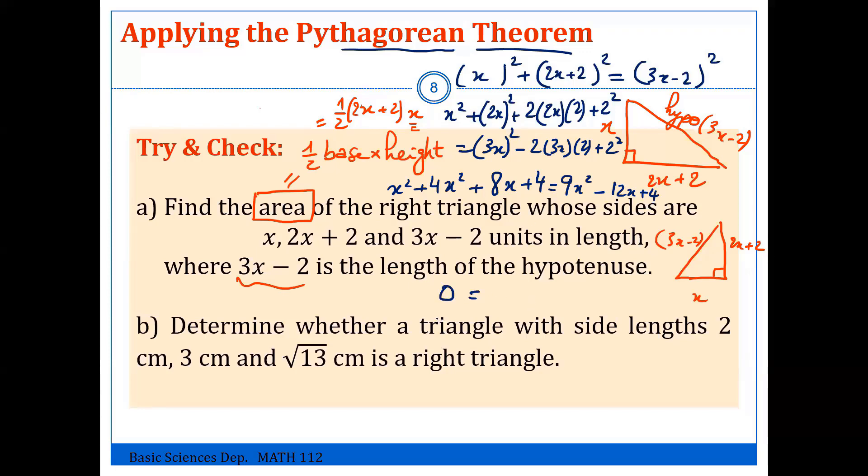so write it in standard form. x squared plus 4x squared is 5x squared, move to the other side, so 9 minus 5 is 4. Minus 12, minus 12, minus 8, minus 8,